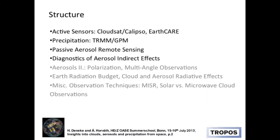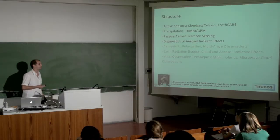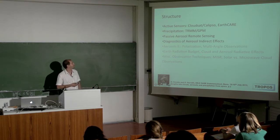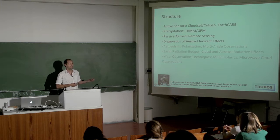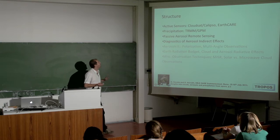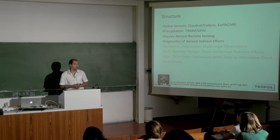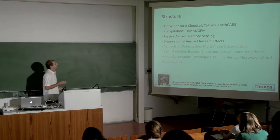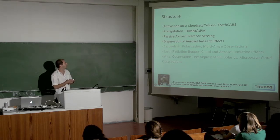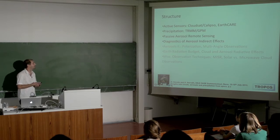I'll start with active sensors — what is possible from space at this stage, and a perspective on upcoming missions, in this case EarthCARE. With precipitation, I could have gone into techniques using passive satellite retrievals to estimate precipitation — there's actually a poster by Matthew Young about that — however, these are indirect techniques. You don't see actual precipitation in your signal; it's more a statistical relation. If you really want to see precipitation, you need radar data or passive microwave data.